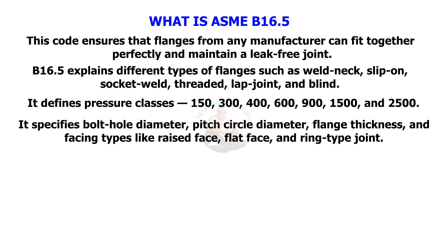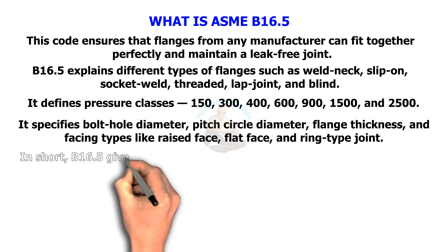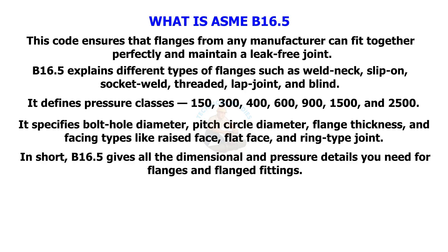It specifies bolt hole diameter, pitch circle diameter, flange thickness, and facing types like raised face, flat face, and ring type joint. In short, B16.5 gives all the dimensional and pressure details you need for flanges and flanged fittings.